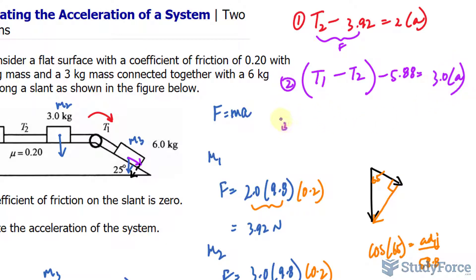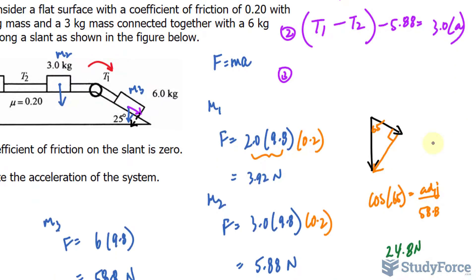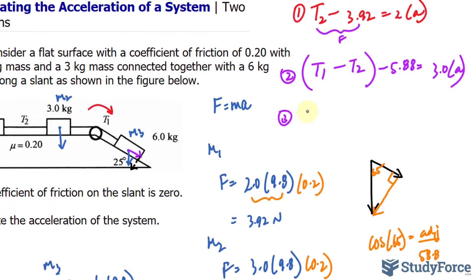Our last equation will relate this mass. And we will be using the magnitude of this vector for the force. So we'll write down what we found as 24.8, 24.8 minus T sub 1. You see how this equation differs from the previous two? Again, that will be equal to 6.0 times the acceleration, A.